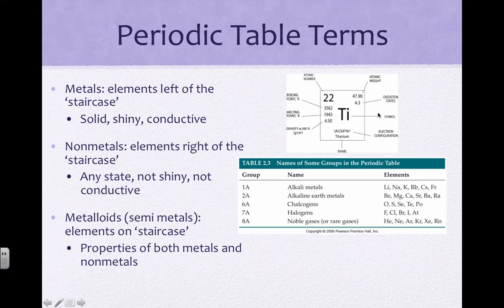In terms of the periodic table itself, depending upon the table, it will have different information. On the AP exam, you're basically just going to get the symbol, the atomic number, and the average mass or atomic weight.